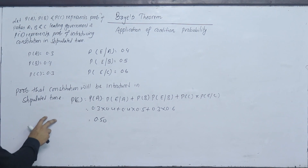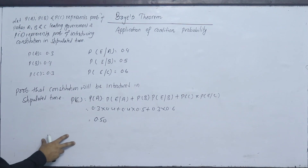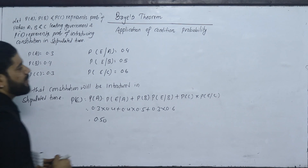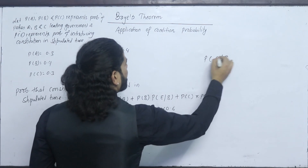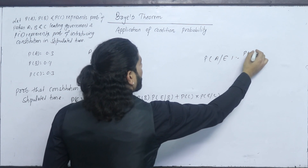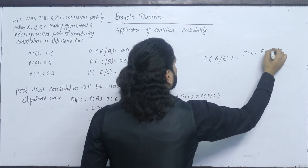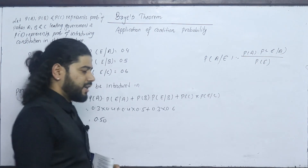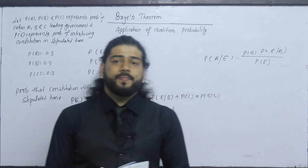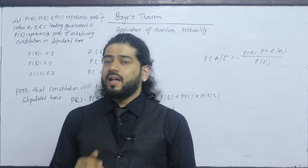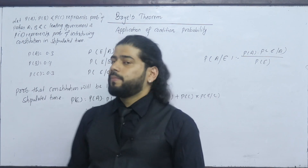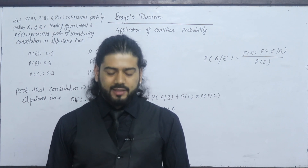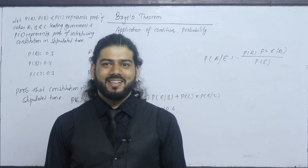If the constitution is introduced in stipulated time, what is the probability that it was introduced under party A or B? We will solve this using Bayes' theorem in the next class. Thank you.